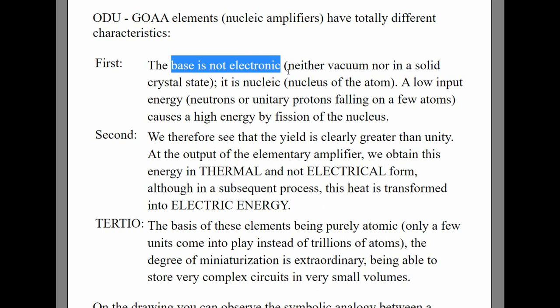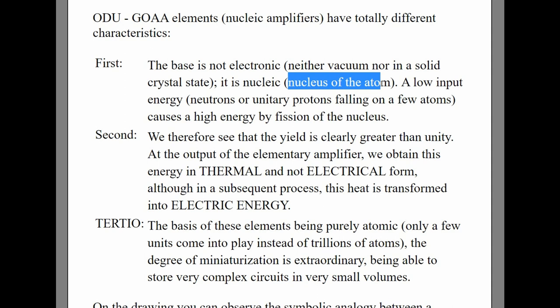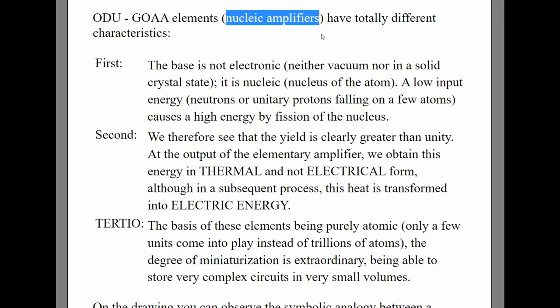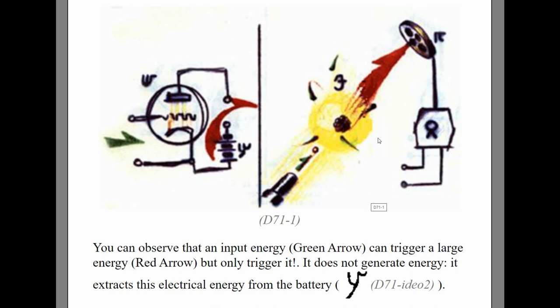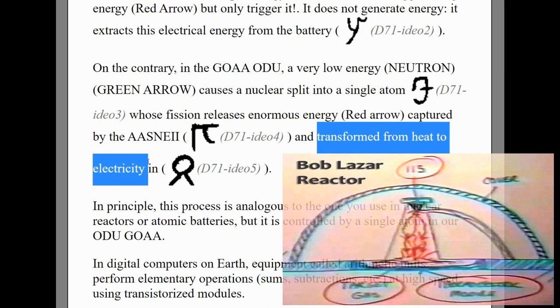First of all, the hardware they use to do computations is not based on electronics. We use what we call capacitors and transistors. On UMO, they use the nucleus of the atom, and they have hardware devices called nuclear amplifiers. On the right side you will see a teaching diagram of one of their nuclear amplifiers. It is an over-unity device, which means the input is small and the output is greater than the input. You can also see some interesting parallels between this device and Bob Lazar's sport model reactor.